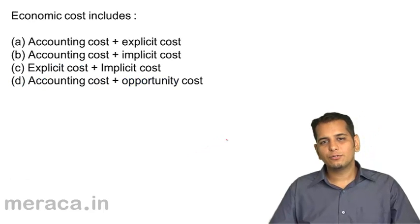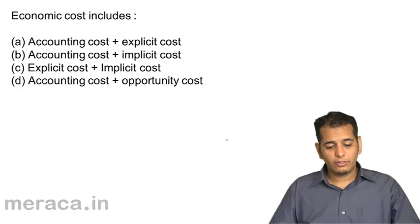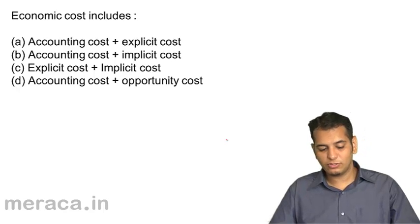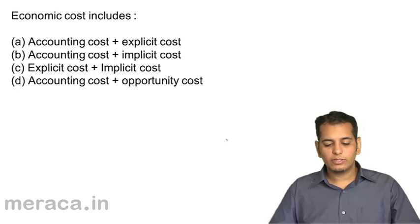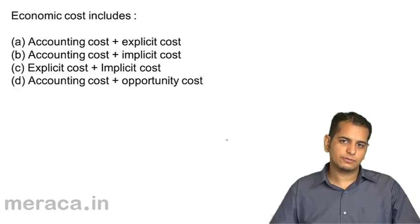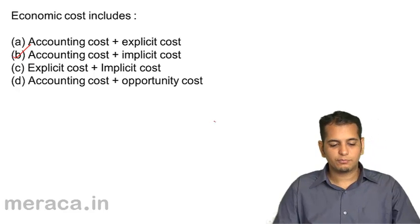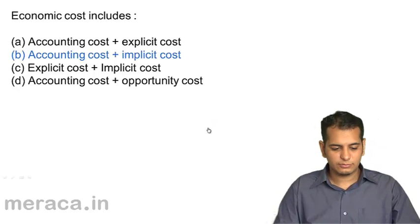Economic cost includes: (a) accounting cost plus explicit cost, (b) accounting cost plus implicit cost, (c) explicit cost plus implicit cost, and (d) accounting cost plus opportunity cost. It's accounting cost plus implicit cost, that's right.